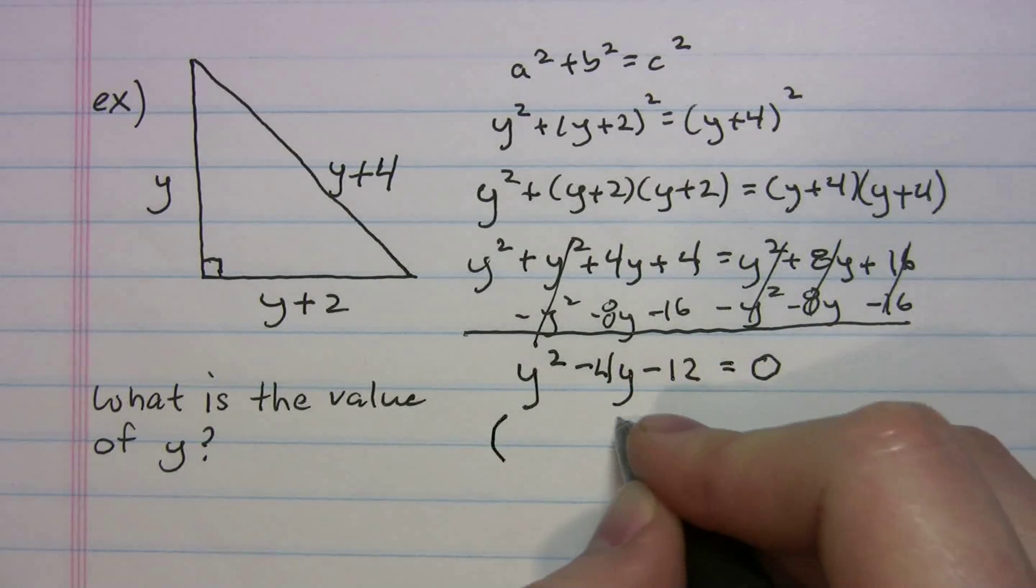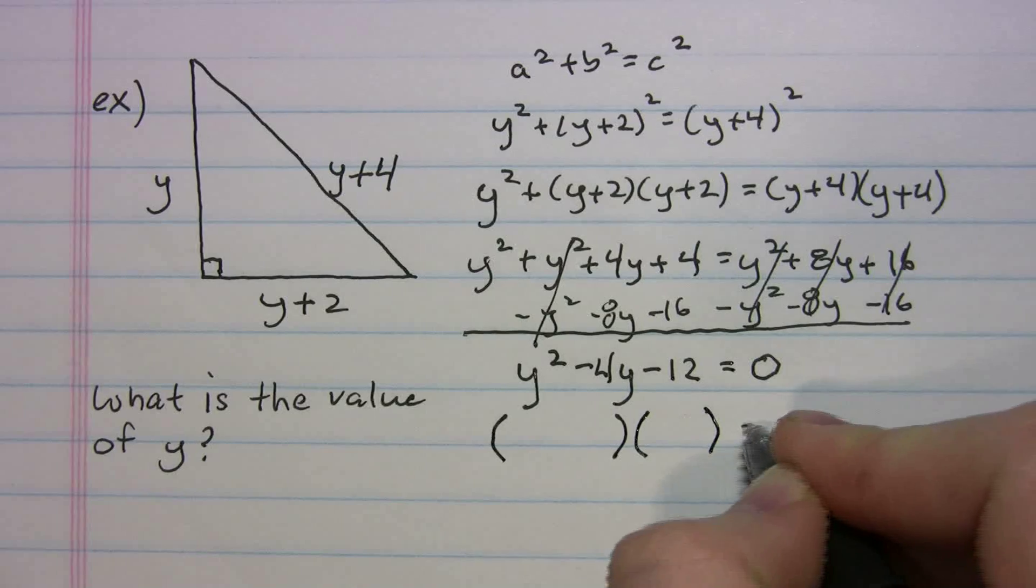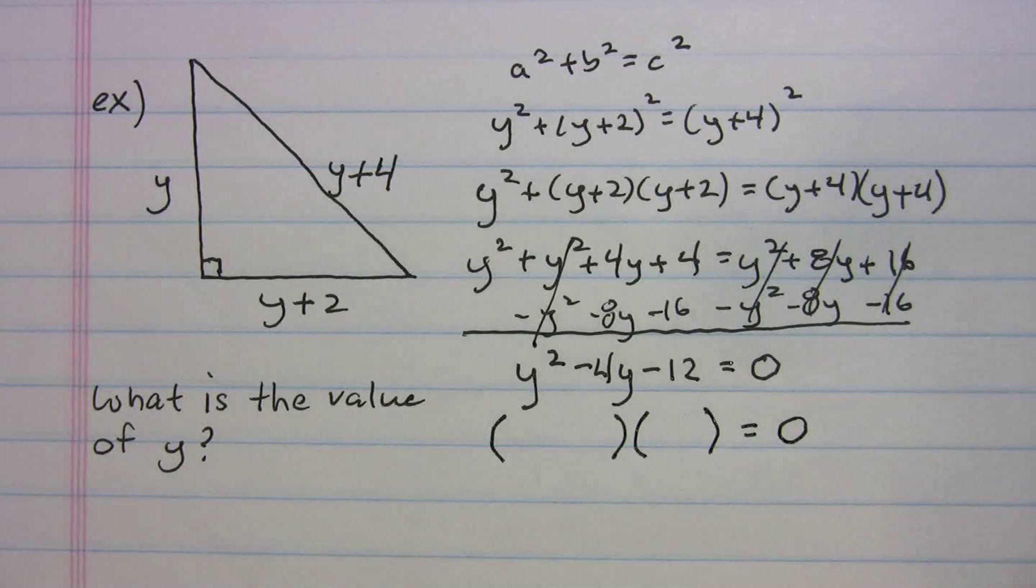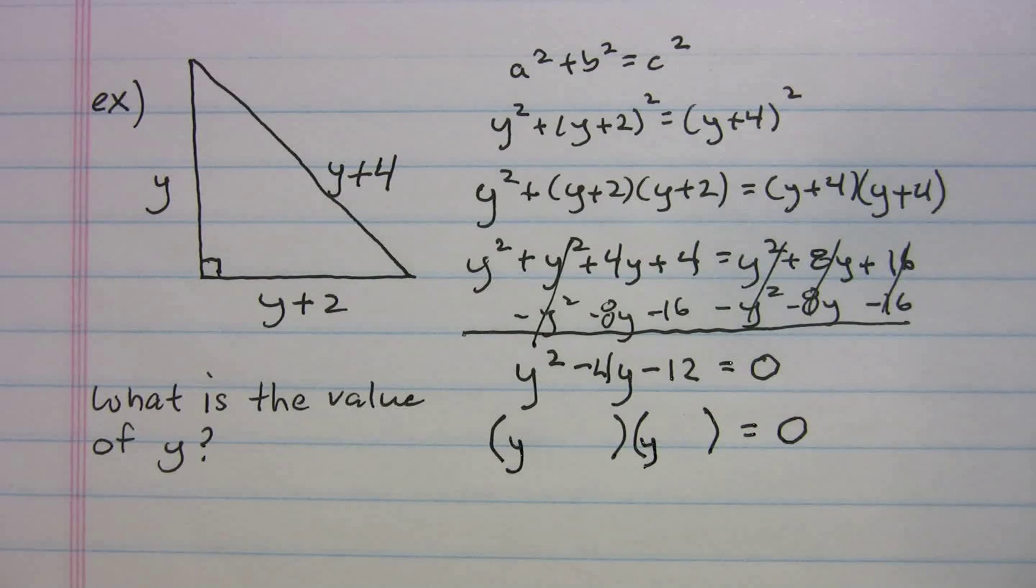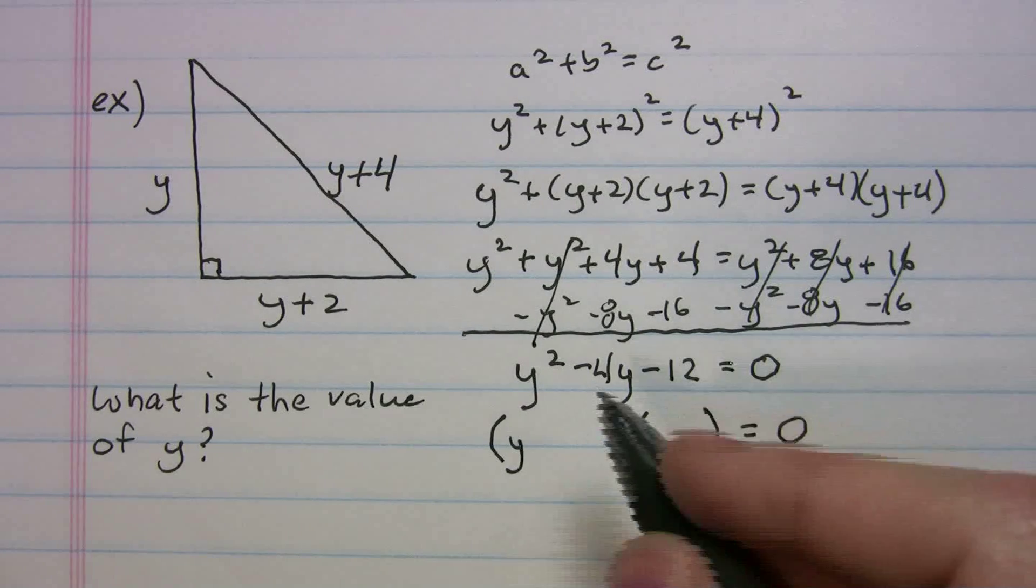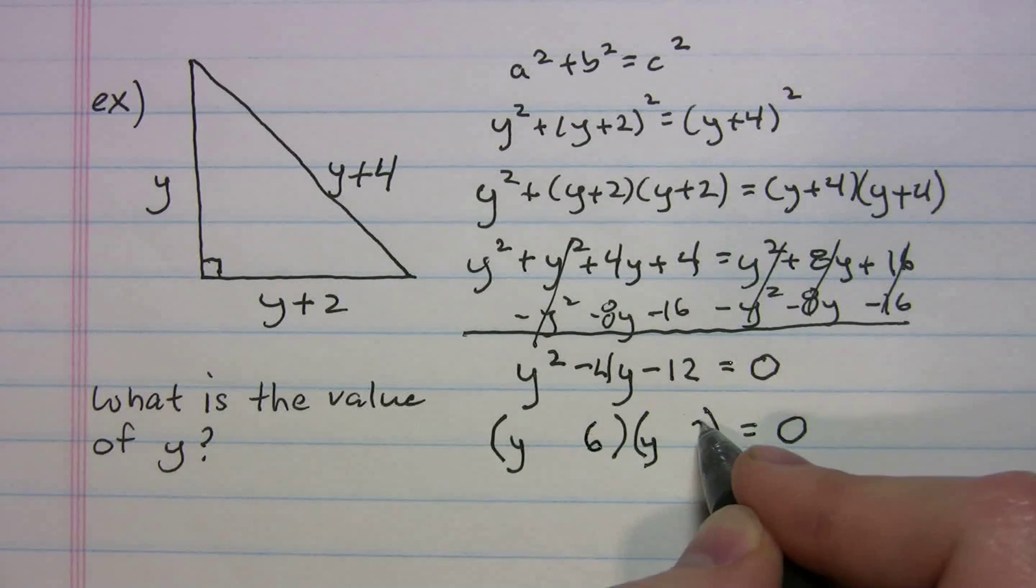Now we've got a reverse foil to figure out what the heck y equals. So you do your double bubble. I made the second one a little small. That's all right. Always put your y's in first. Now how can we get negative 12? Well, I'm going to venture and say we can, let's try 6 and 2.